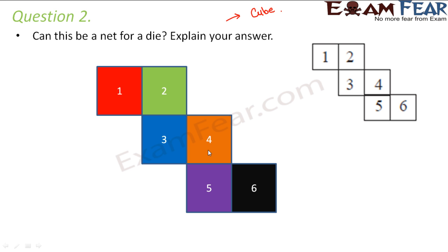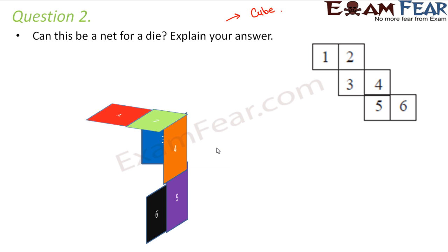Now let us see by folding if we can make a cube. Let us make the first fold from here, the second fold from here. The moment we make these two folds, we are gradually making up a box here. Now the third fold would be turning this side.